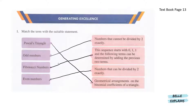I've already matched it here to the Fibonacci numbers. Next, numbers that can be divided by 2 exactly. So even numbers are those numbers because 2, 4, 6, 8 and 10 and so on can be divided by 2 exactly. Lastly, geometrical arrangements on the binomial coefficients of a triangle. So we have Pascal's triangle.